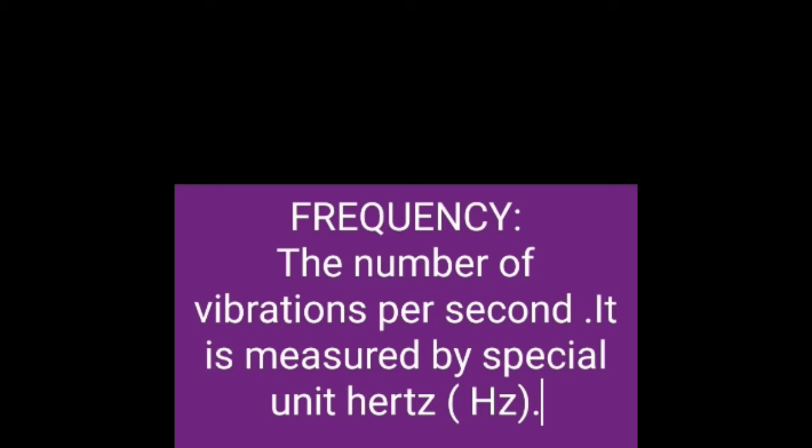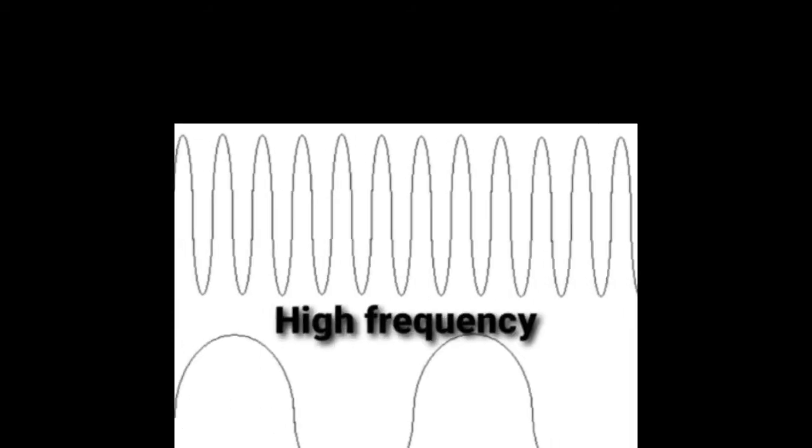Now we are going to study about frequency. The number of vibrations per second is called frequency. It is measured by a special unit called hertz. High frequency has more vibrations per second, while low frequency has fewer waves produced per second.